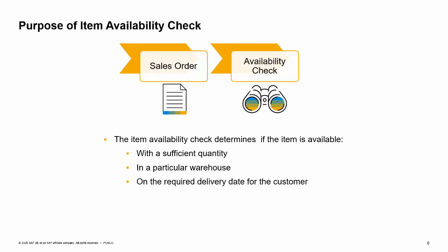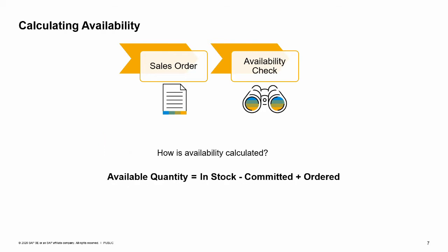An item availability check will determine if the item is available with a sufficient quantity for your sales order, in the particular warehouse associated with your sales order row, on the customer's required delivery date. How is availability calculated? The basic definition is this: available quantity is calculated as the in-stock quantity minus the committed quantity plus the ordered quantity.